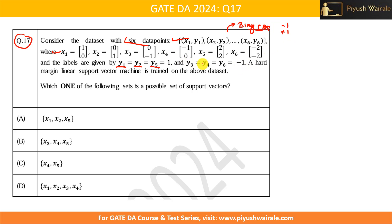A hard margin linear support vector machine is trained on the above dataset. This question checks your understanding of hard margin in the case of a linear SVM. If you understand what this is, you can easily identify the answer from the four options. We need to find out which one of the following sets is a possible set of support vectors.